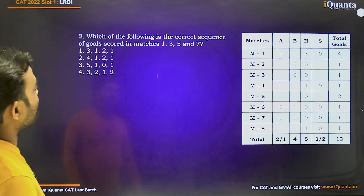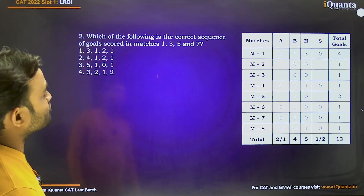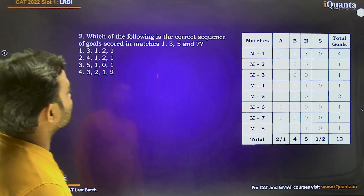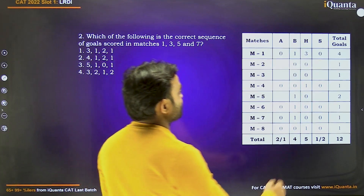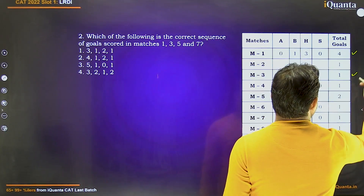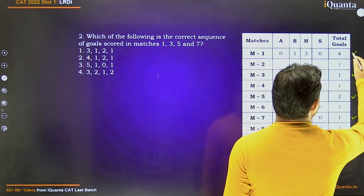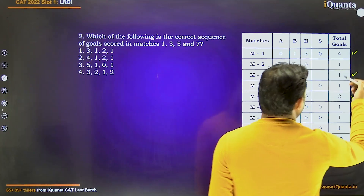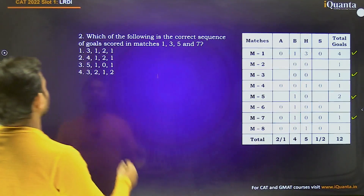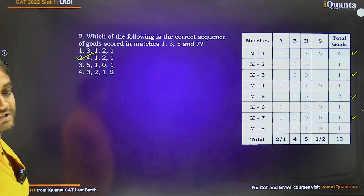Second question: Which of the following is the correct sequence of goals scored in matches 1, 3, 5, and 7? The answer is 4, 1, 2, 1. Option 2 is correct.